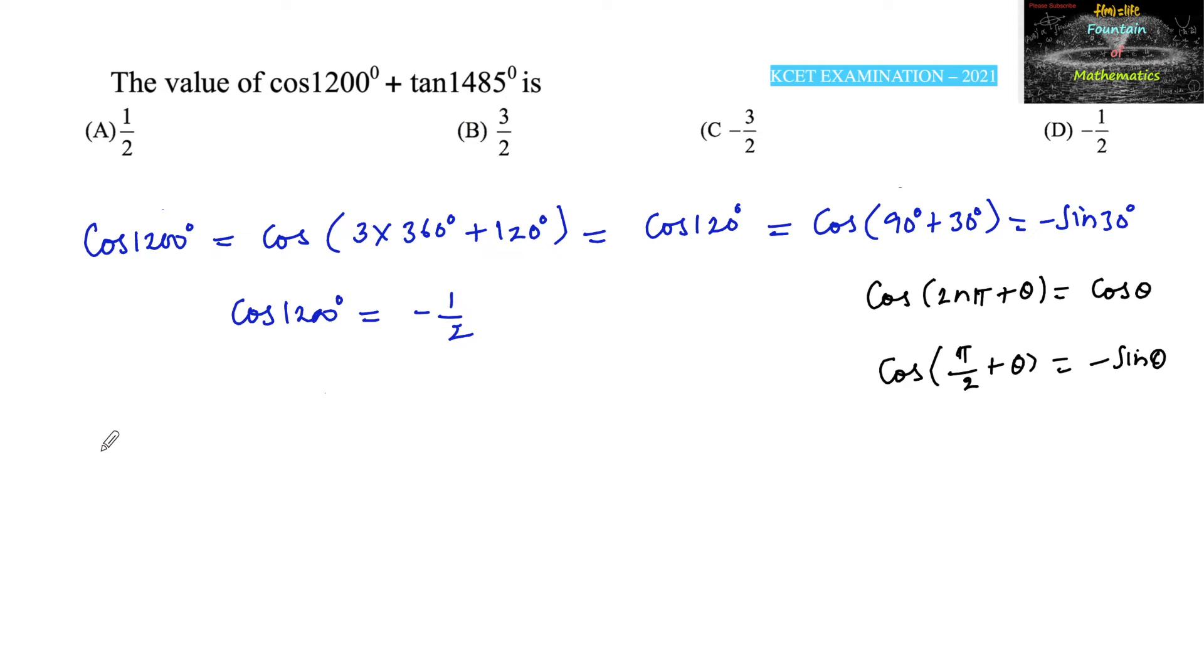And tan 1485 degrees, which can be written as tan 4 times 360, that is 1440, plus 45 degrees.